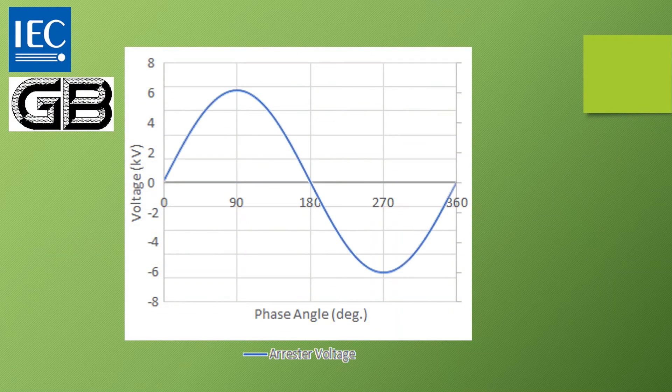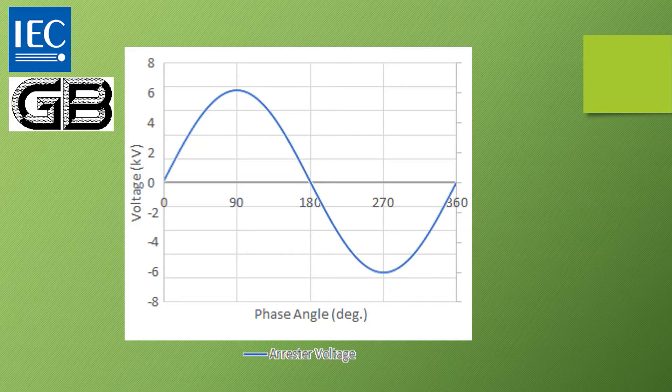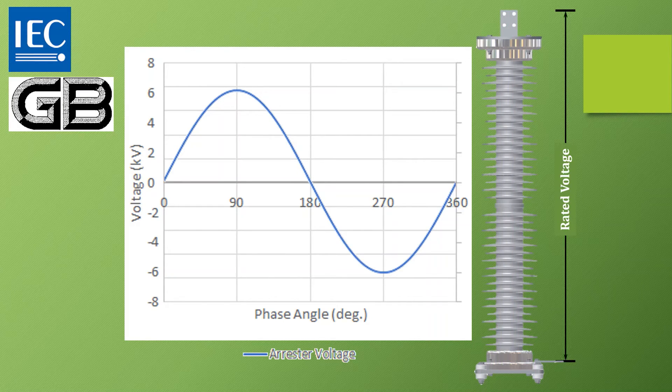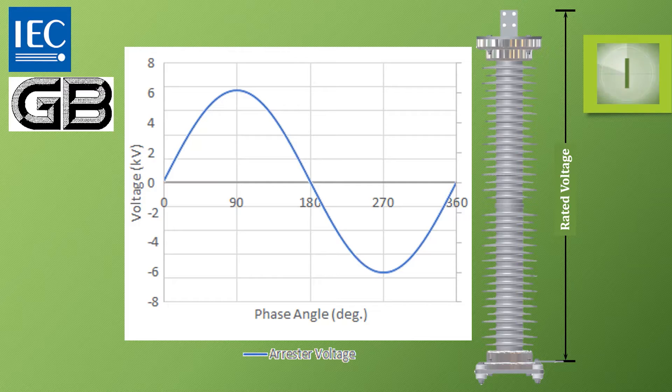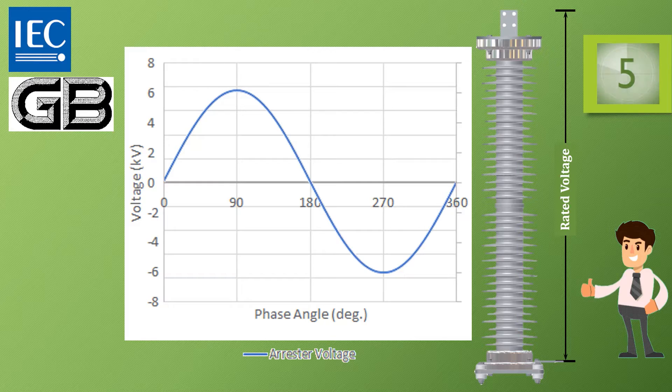Rated voltage as defined in IEC and GB standard is the maximum permissible power frequency RMS voltage that can be applied across arrestor terminal for a duration of 10 seconds. So as per IEC and GB standard, the rated voltage is 10 second temporary overvoltage.